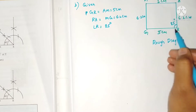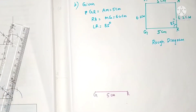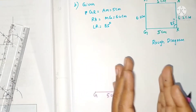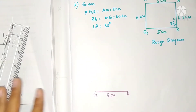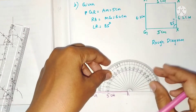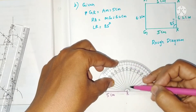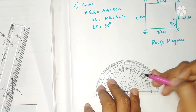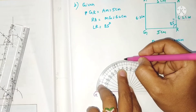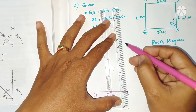First draw a line segment GR of length 5 centimeters. When constructing, start in the middle of the page. Now we have angle R = 85 degrees. Take the protractor — 90 is the middle, and 85 is below 90, so it lies on the left side between 80 and 90. Mark 85 degrees and draw a ray.